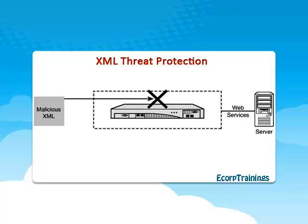Coming to XML Threat Protection Service: using Extensible Markup Language, intermediate network nodes are able to extract portions of the data stream and affect application-aware policies. Unfortunately, this has enabled a new opportunity for attacks in the IT field. The emergence of XML has seen the rise of new vulnerabilities in enterprise information systems.